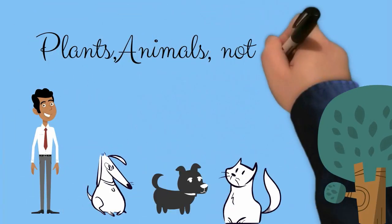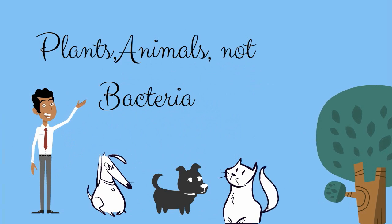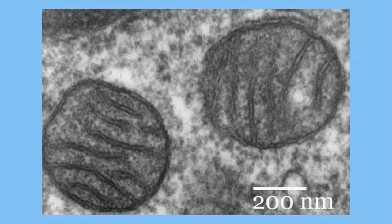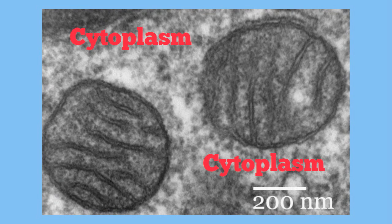Mitochondria are found in both plants and animals but not in bacteria cells. Mitochondria are also found in the cytoplasm of the cell. Here are a couple pictures of what the mitochondria look like.